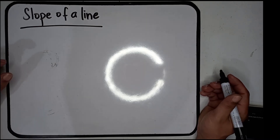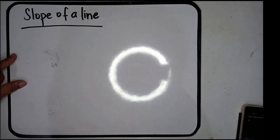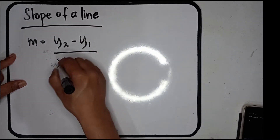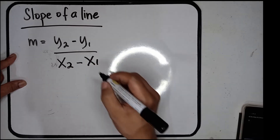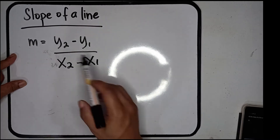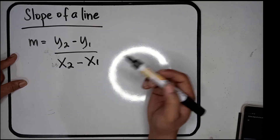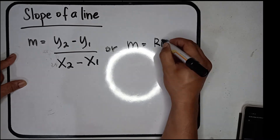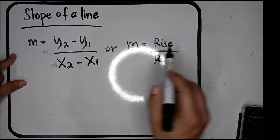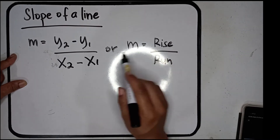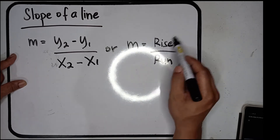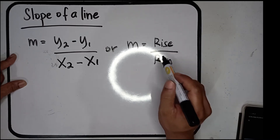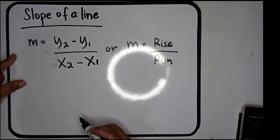To get the slope of a line, we use the formula: m equals y-sub-2 minus y-sub-1 over x-sub-2 minus x-sub-1. This is also known as m equals rise over run, meaning the behavior of the line is defined by how fast it rises up as it moves forward.